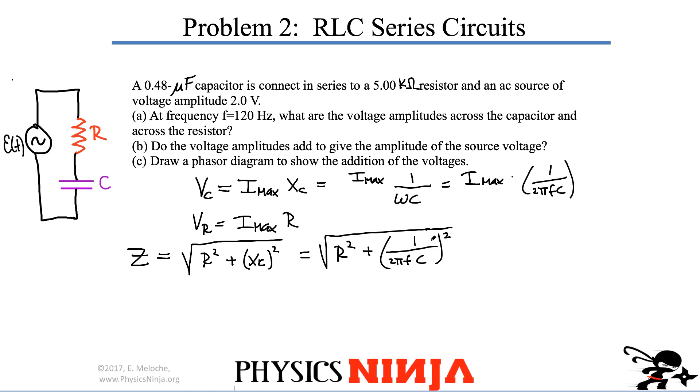I know all the values here. I know what the resistance is. It's 5 kilo ohms. That's 5 times 10 to the 3. I know the capacitance. Make sure you're working in SI units. And the frequency is 120. So just substitute everything in there.